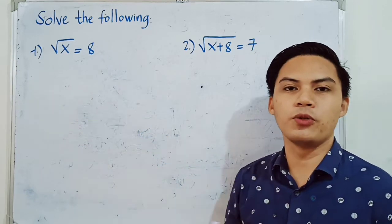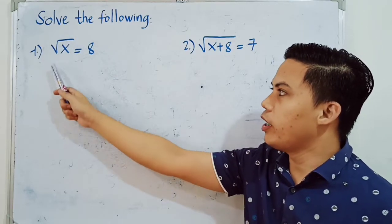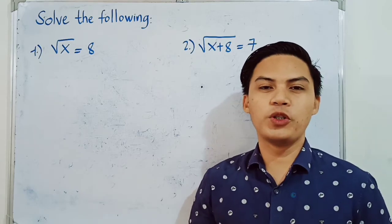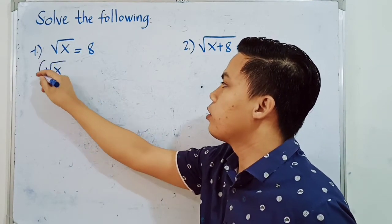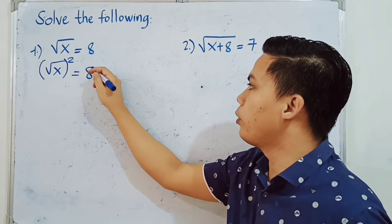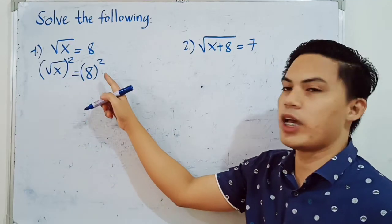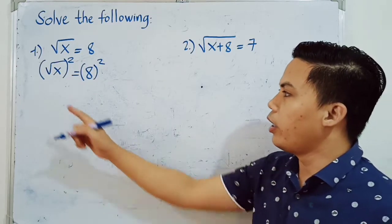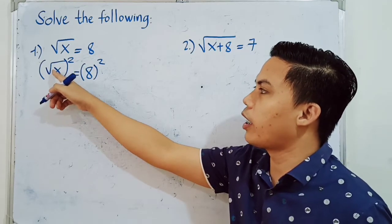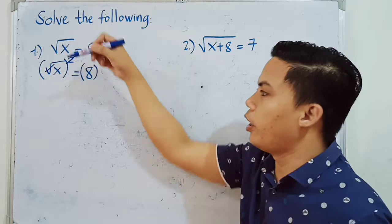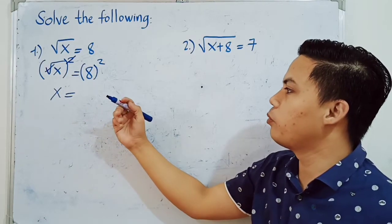For number one, we have the square root of X is equal to 8. The first step is to get rid of the radical sign. We're going to use the squaring property of equality and square both sides of the equation. So the square root of X raised to the power of 2, and we also raise the right side to the power of 2. We can cancel the radical sign with the square, so what remains is X.